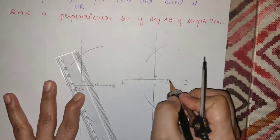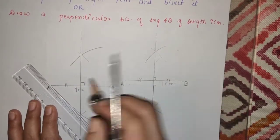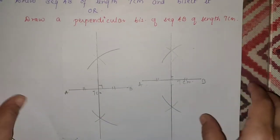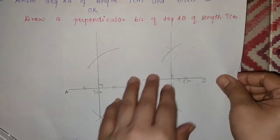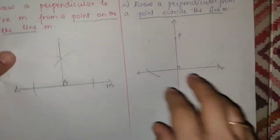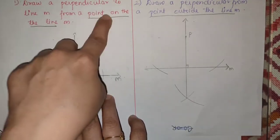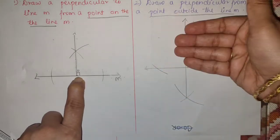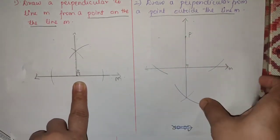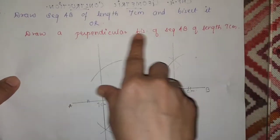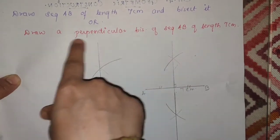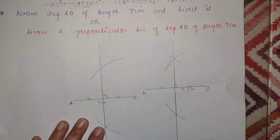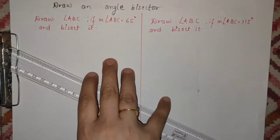So students, there are three types: first type — perpendicular from a point on the line; second — perpendicular from a point outside the line; and third — perpendicular bisector. There is a difference: the first two are perpendiculars, while the third is a perpendicular bisector. Now let us move to the next question.